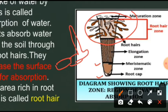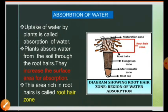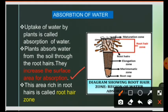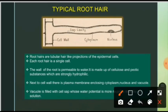Root epidermis and root hairs increase the surface area for water absorption. Water is absorbed along with the minerals by the root hairs by diffusion. The area which is rich in root hairs we call the root hair zone. Here in this diagram you can see that this area is the root hair zone — this is the main site where plants absorb water.